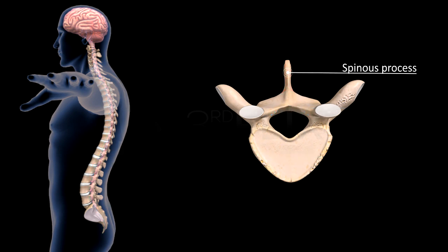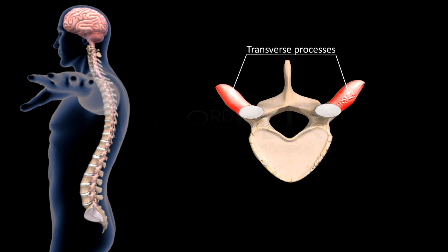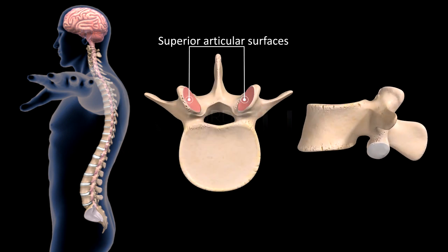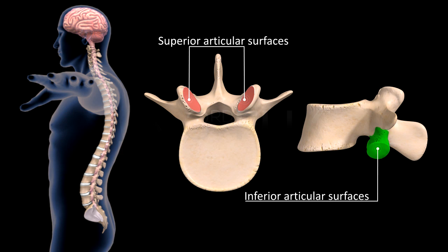A neural spine, or spinous process, is present on the dorsal surface of the neural arch. Transverse processes are present, one on each side of the vertebra. There are two superior articular surfaces, or pre-zygapophyses, and two inferior articular surfaces, or post-zygapophyses, on each vertebra.